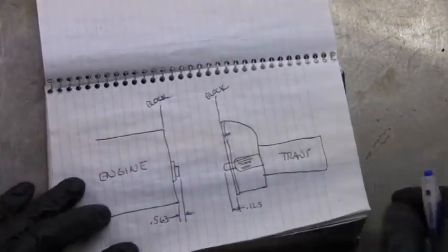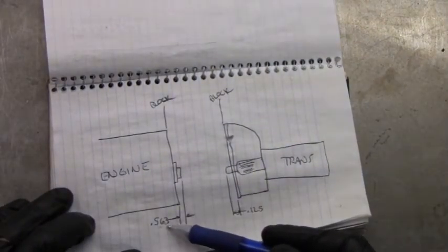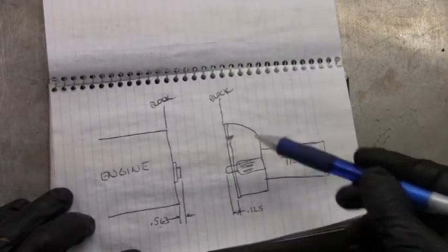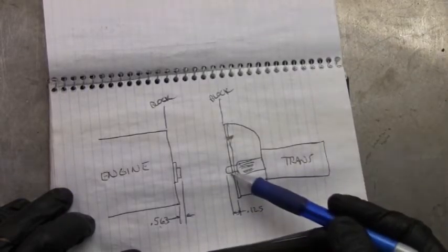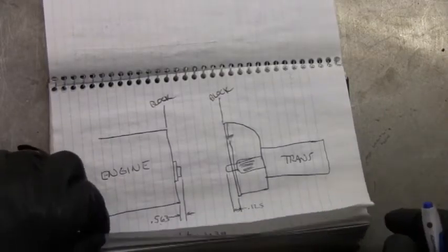Looking at these together, the end of the crank is 0.563 from the back of the block, and from the back of the block, the input shaft to the transmission is 0.125. So now how does all this relate?